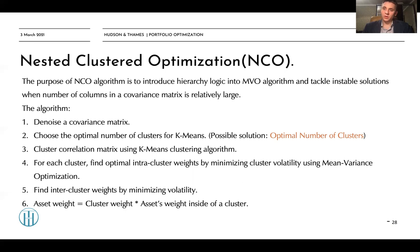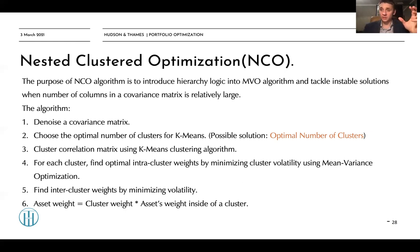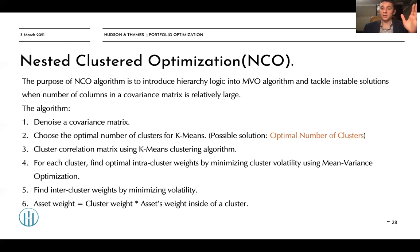To recap: first, we split our correlation matrix using the k-means algorithm into different clusters. After that, we find the optimal minimum volatility solution for each individual cluster. Based on that, we understand the volatility and variance of each individual cluster. Based on that, we build a new covariance matrix of clusters, find the minimum variance solution at the cluster level, and then multiply the cluster weight by the intracluster weights to find the individual asset weights.